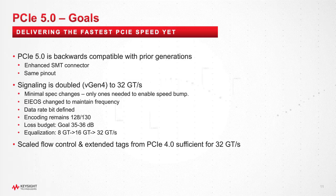A big difference between PCI Express 4 and 5 is the loss budget for the channel. We're targeting between 35 and 36 to even 38 dB of loss for standard FR4 mid-loss type material or better for PCI Express 5.0.